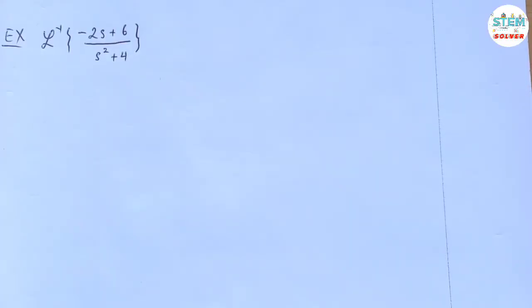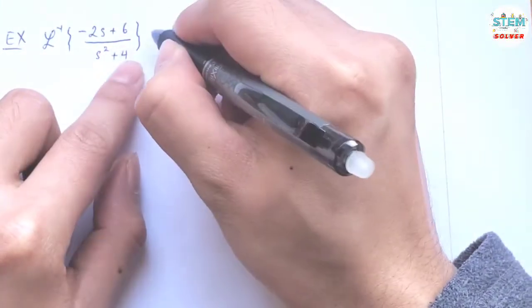Find the inverse Laplace transform of negative 2x plus 6 over x squared plus 4. So first of all, I'm going to break this out into 2 fractions.